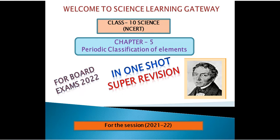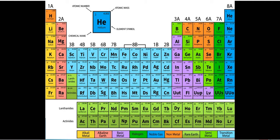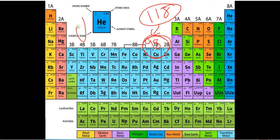I have already uploaded a detailed video for Chapter 5 with notes covered from your NCERT Science textbook — you can check that in the Class 10 playlist. Now let's start the revision from Chapter 5: Periodic Classification of Elements. There are 118 elements in the periodic table; out of these, 98 elements are naturally occurring.